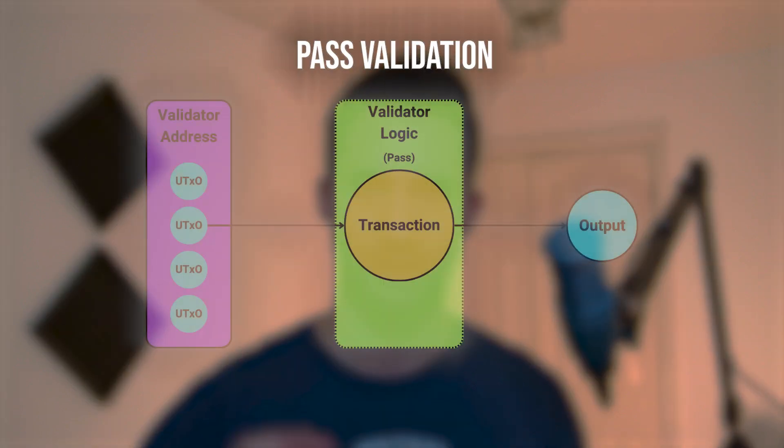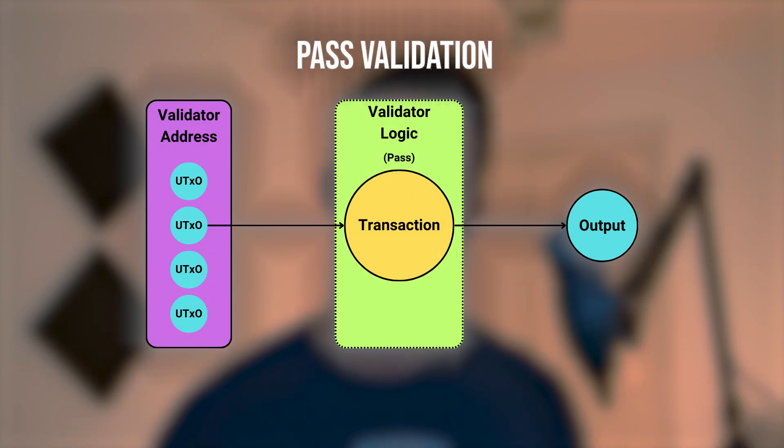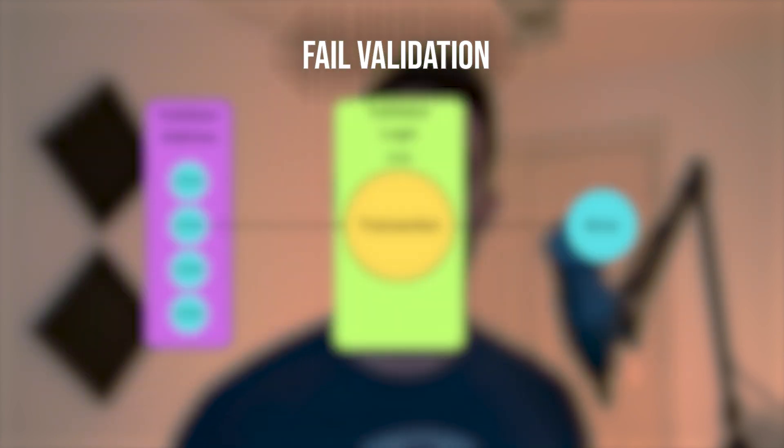Always references Always Succeeds validators — basically nothing validators. No matter what, they're always going to pass, which is not really what you want from validators. Validators are essentially logic gates. They look at the state of a transaction and based on the script purpose, they'll say: according to the logic, does this satisfy all the validation requirements? If so, it will pass; if not, it will fail.